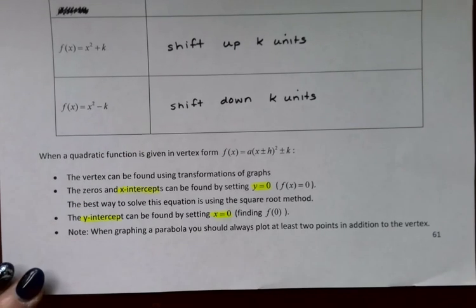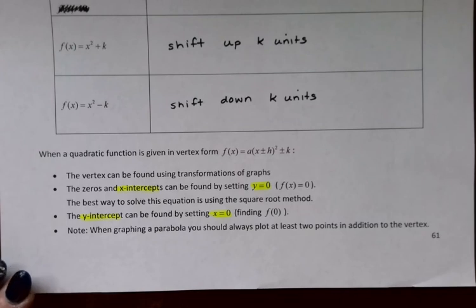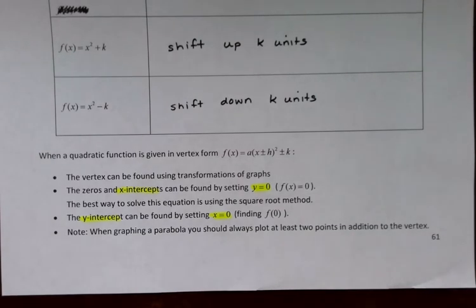Last little note before we try a few practice problems. When you are graphing a parabola, you should always plot at least two points in addition to the vertex. That gives you enough points to draw a reasonably accurate graph of your parabola. Let me pause there and we'll do a couple of examples in the next video.